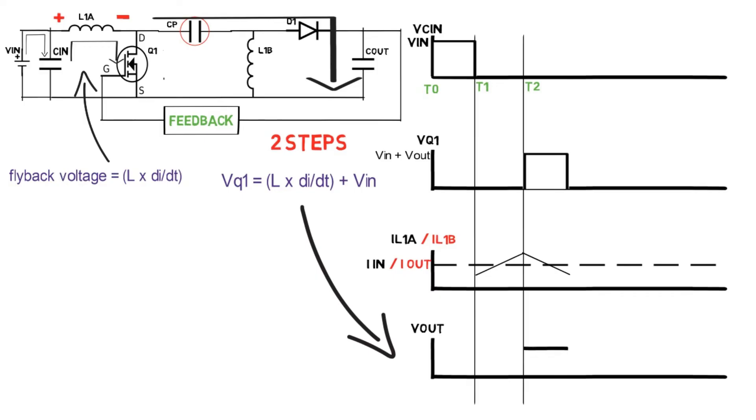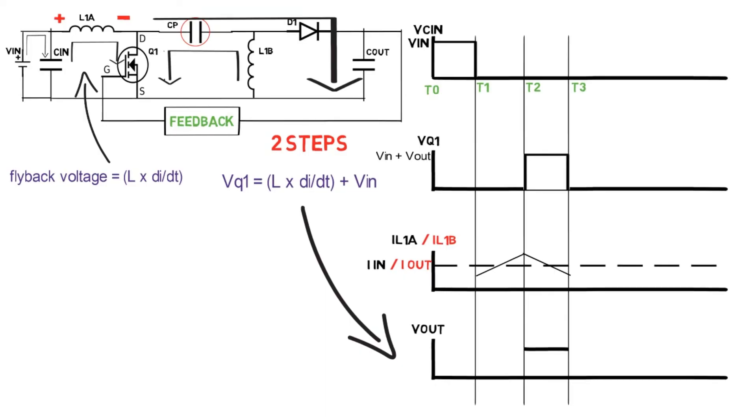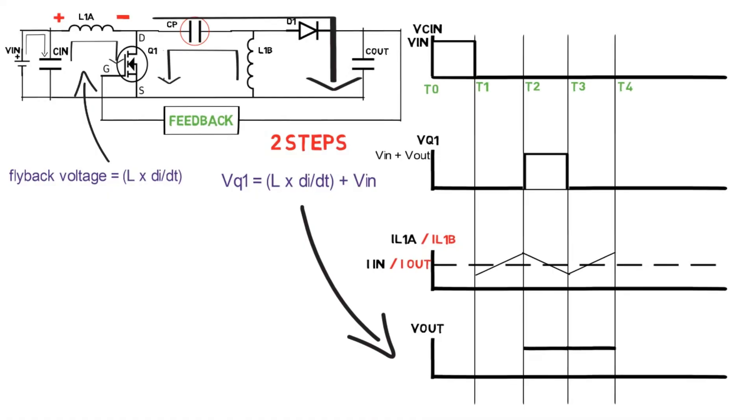Now switch Q1 is again turned on at time T3. Inductor L1a starts charging due to input capacitor, and L1b starts charging due to CP. So these capacitors and inductors are aligned to each other. Due to the discharging of CP, diode becomes reverse biased. The output capacitor discharges and the load gets continuous supply.